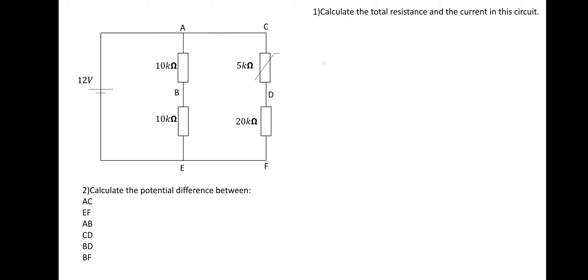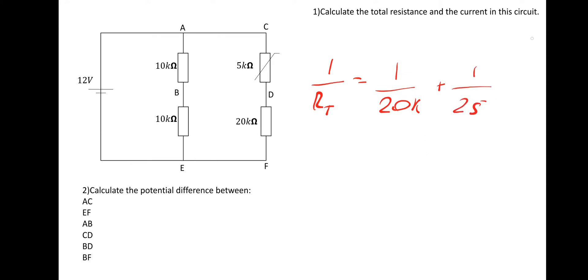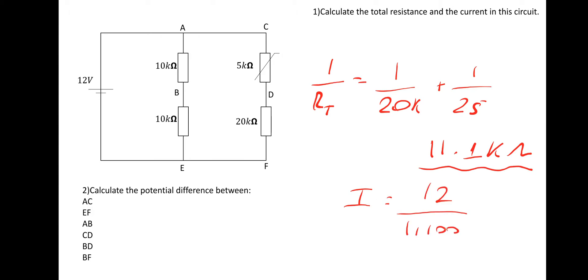The 10k and 10k ohm resistors in series give 20k ohms. The 20k and 5k ohm resistors in series give 25k ohms. Using 1/RT = 1/20,000 + 1/25,000, taking the reciprocal gives a total resistance of 11,100 ohms or 11.1k ohms. The current is V/RT = 12 divided by 11,100, giving 1.1 milliamps.